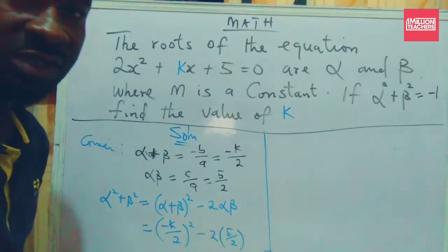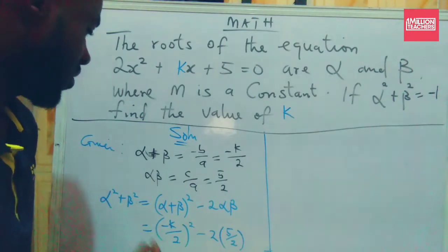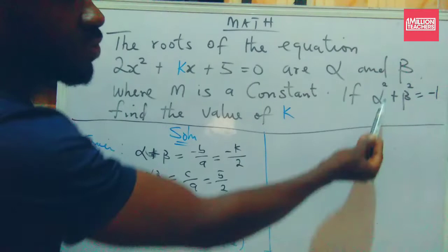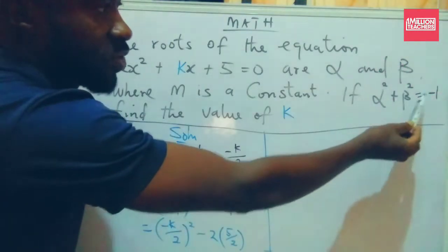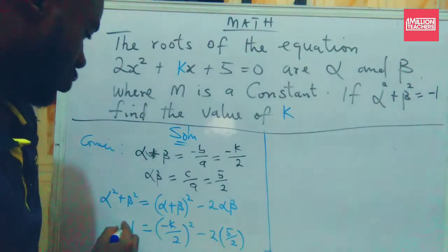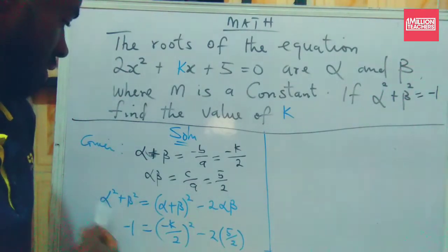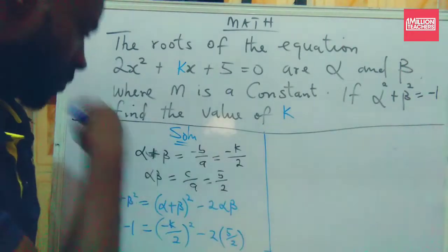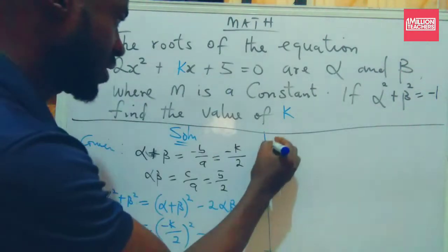I've just plotted in everything. Now also recall that we say alpha² + beta² = -1. So on the left hand side, I can put -1 here to replace this alpha² + beta² because it's given to us.